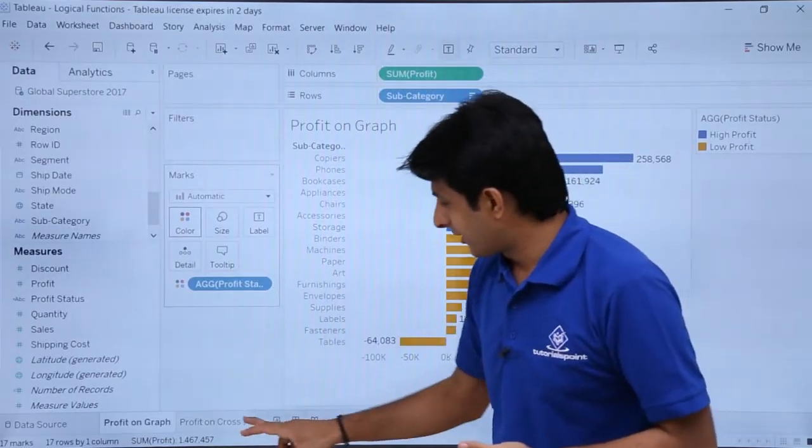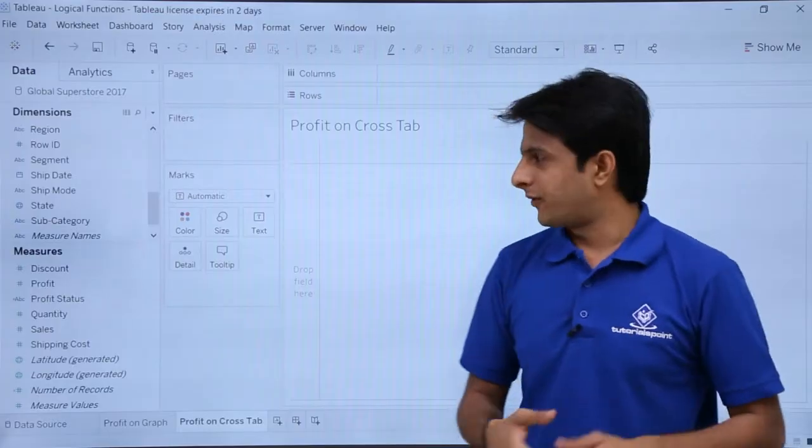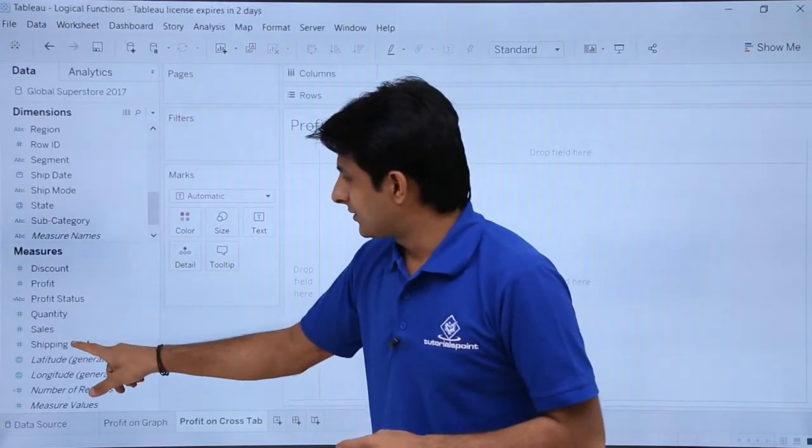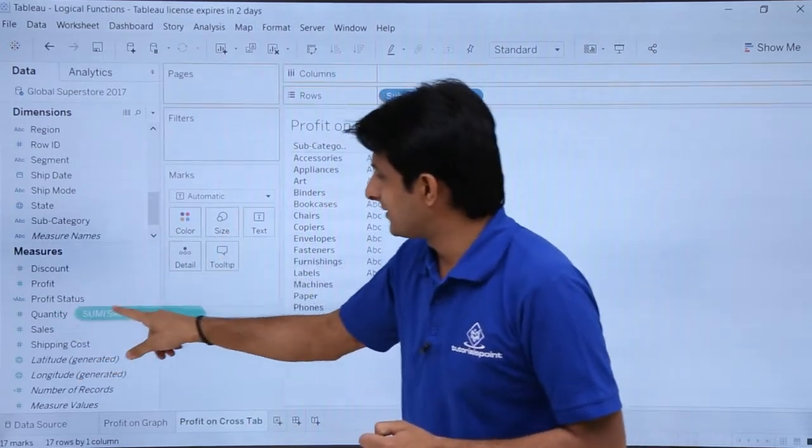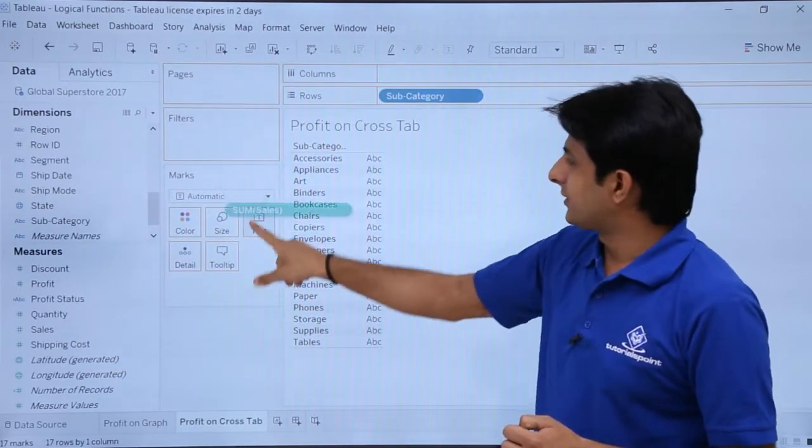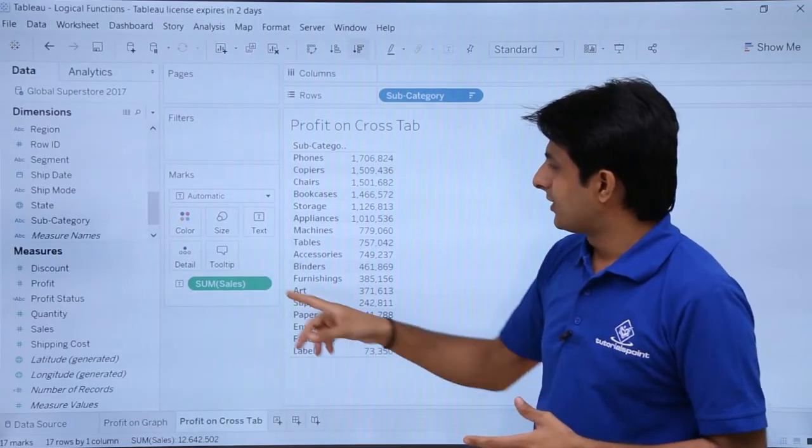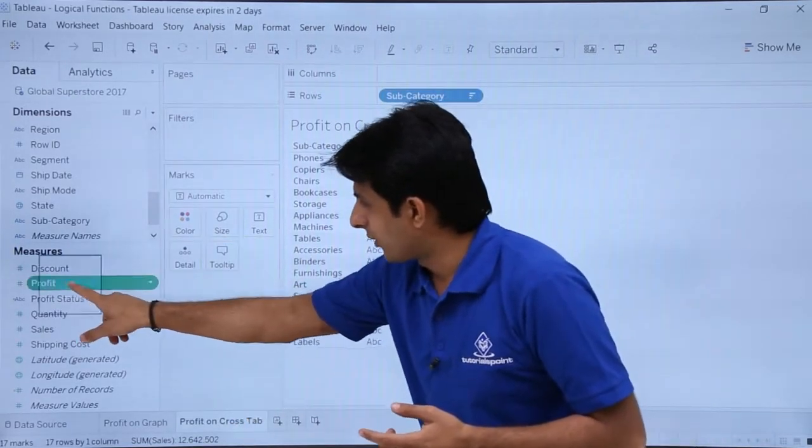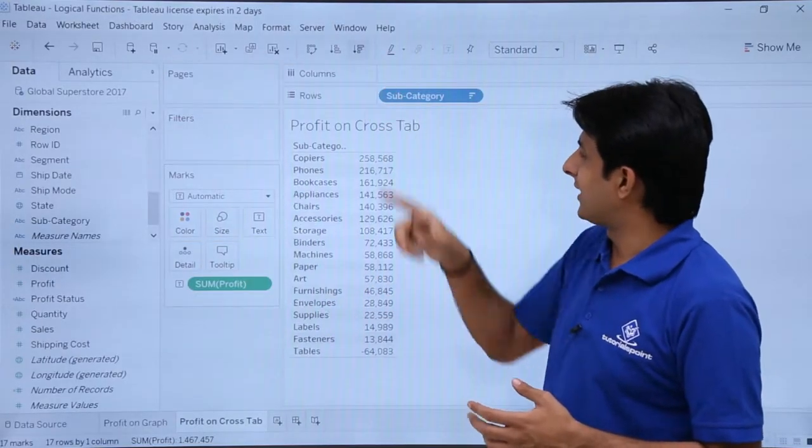Let's see one more example. It will be clear then. If I want to show you profit on a cross tab like high profit and low profit. Again, I'll pull up this subcategory into rows. I'll pick up this sales into this text itself. I don't want anywhere else. Sorted, ascending, descending. So I don't want the sales. I want the profit. So pick up the profit into this text itself. So this is in the descending order.